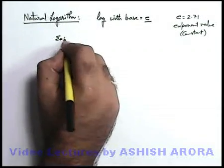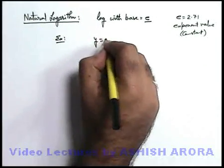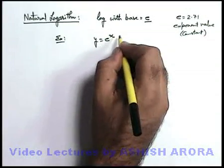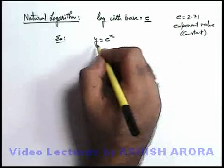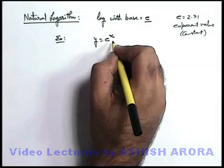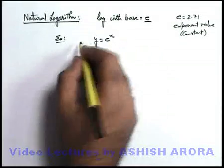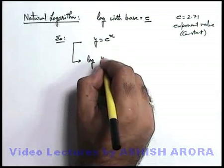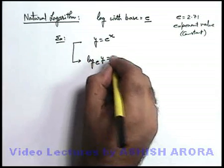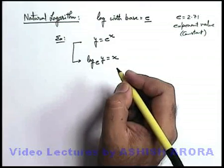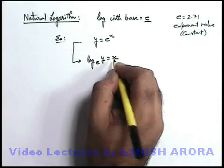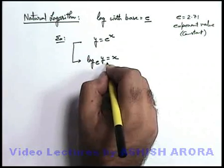Like for an example, if we are given with y is equal to e to power x. Here you can see the power is containing the variable, so obviously this is an exponential function. Now this can be represented in logarithmic form by writing like log of y to the base e is equal to x. This log of y to the base e, which is having a value x, is called natural log of y.